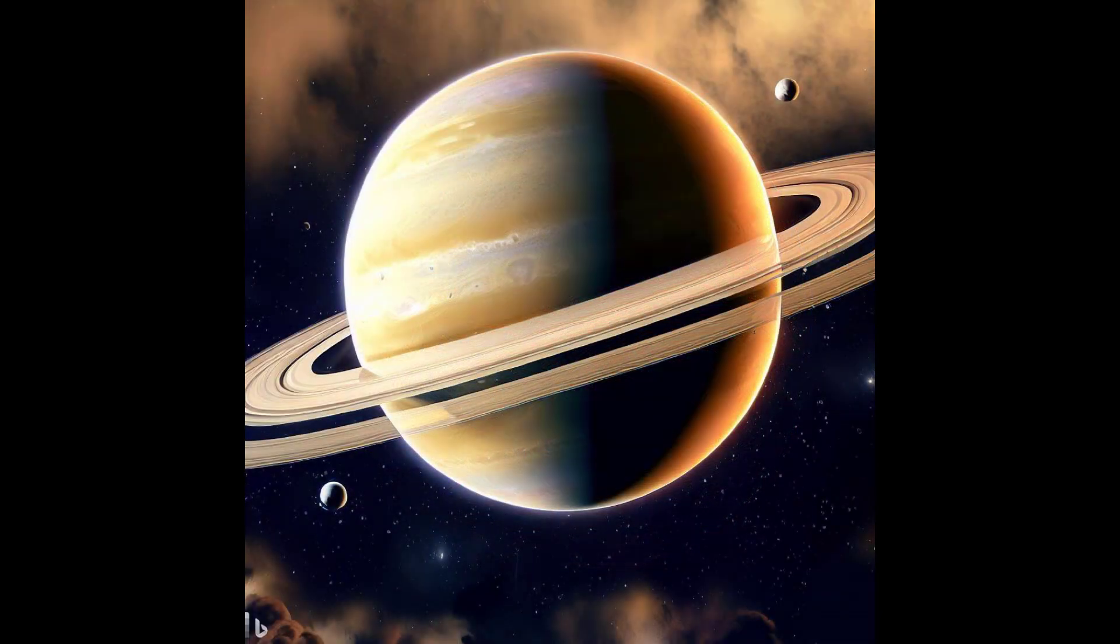Saturn is the sixth planet from the Sun and the second largest planet in our solar system. It has a thick atmosphere made mostly of hydrogen and helium. It has at least 27 moons.